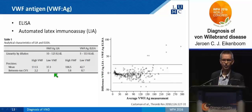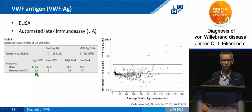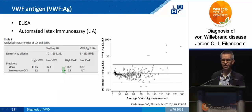The advantage of the LIA test is that it is automated and has high precision, with a CV of about 2%, which is somewhat better than the ELISA. The disadvantage is that the lower limit of detection is not as low as in the ELISA.